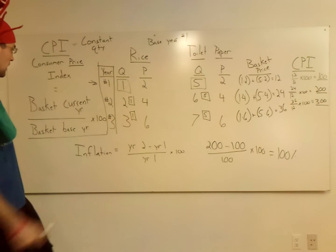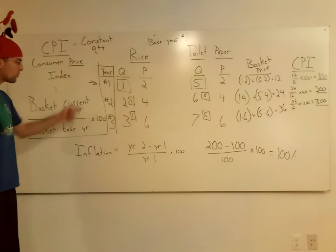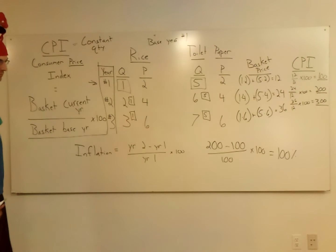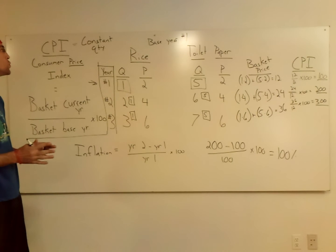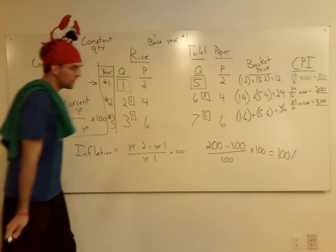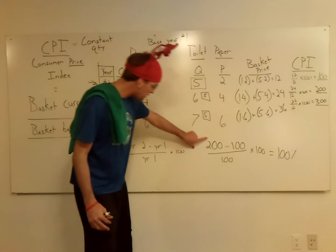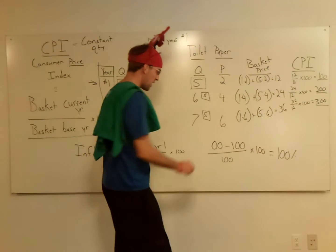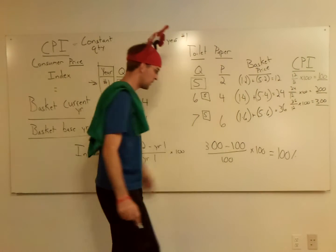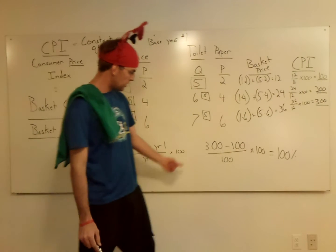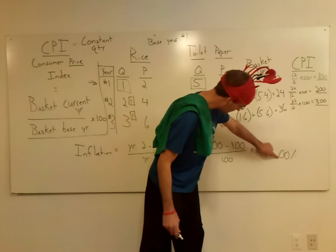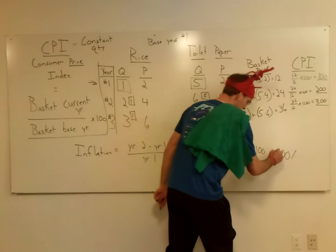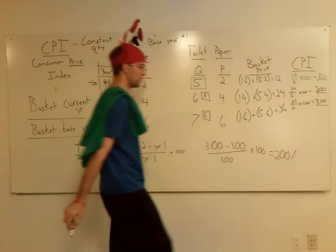Can you figure out, instead of going from year 1 to year 2, let's go from year 1 to year 3. See if you can do that. I'll give you a second. Alright, the only thing that's going to change is instead of having 200, you're going to have 300. 300 minus 100, that's 200 over 100. 200 over 100, instead of having 100% inflation, you have 200% inflation.